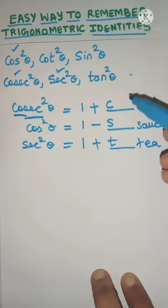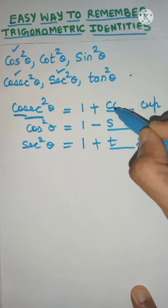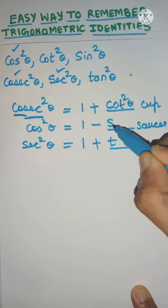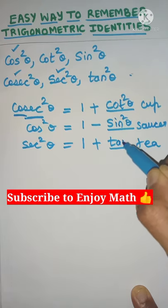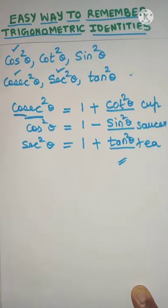Now from these remaining ratios which will start with c, yes cot square theta. What about s? Yes, sec square theta. And from t you will have tan square theta, and that's how you get your identities.